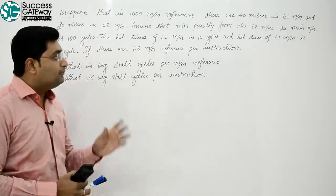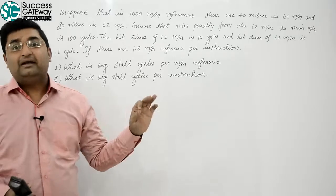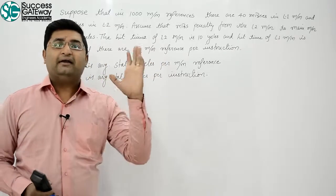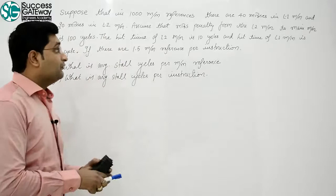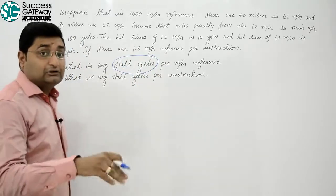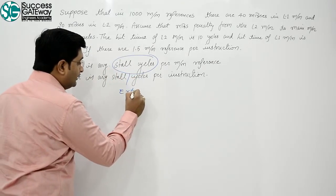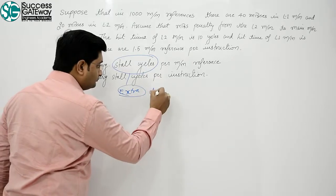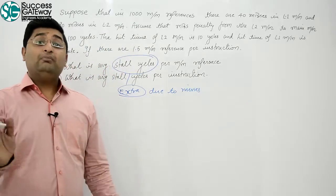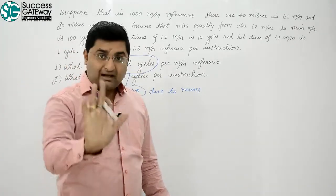Now, listen carefully. I will explain the procedure clearly so that any question of this variety can be solved. What is the meaning of stall cycles? Stall cycles means extra cycles that are incurred due to a miss. If those misses had not occurred, these stall cycles would not exist at all.